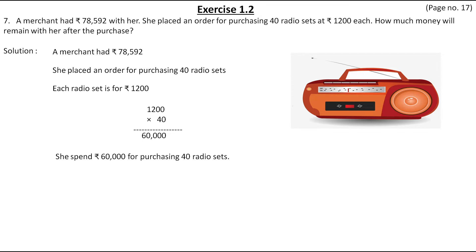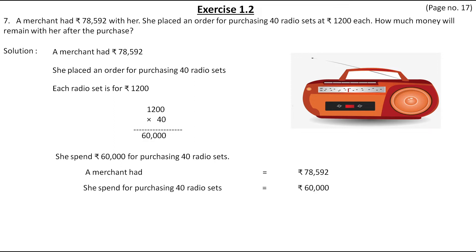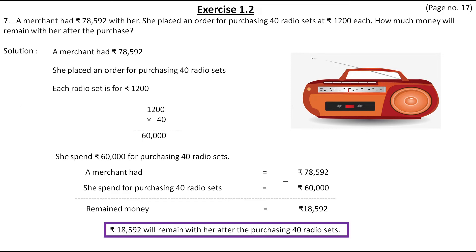Now we have to subtract 60,000 from the 78,592 which she had before purchasing. A merchant had rupees 78,592 and she spent 60,000 for purchasing 40 radio sets. After subtraction, the remaining money is rupees 18,592. So the final answer for this question is rupees 18,592 will remain with her after purchasing 40 radio sets.